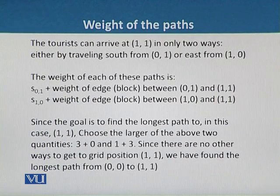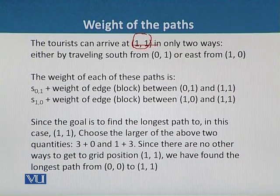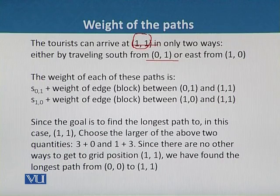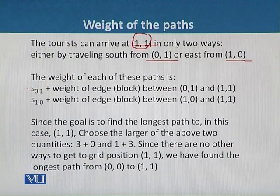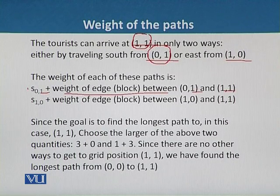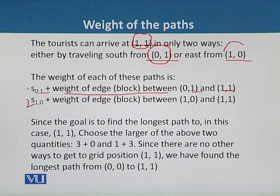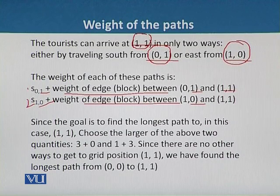If the tourist has to reach point (1,1), the tourist has only two choices: either by traveling south from (0,1) or east from (1,0). We can calculate the weight of path one as S[0][1] plus the edge weight between (0,1) and (1,1). The second option is to consider S[1][0] and calculate the weight of all edges between (1,0) and (1,1).